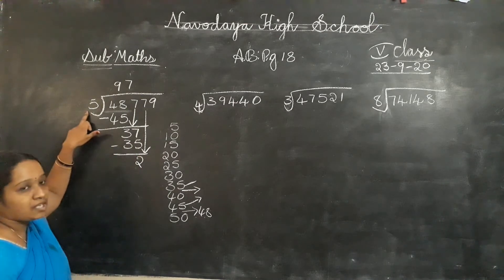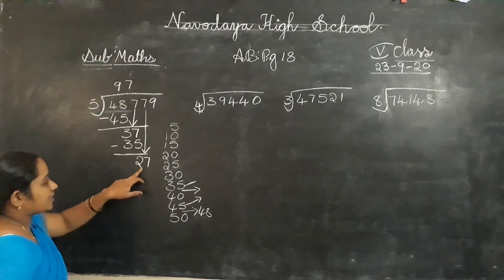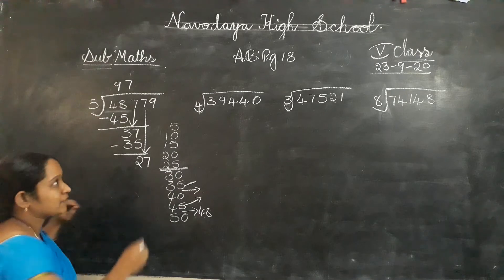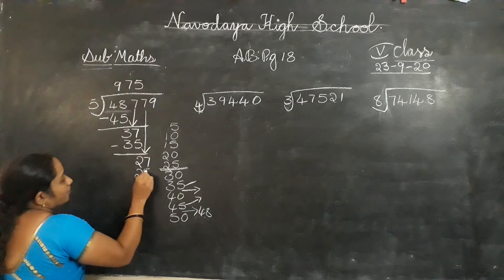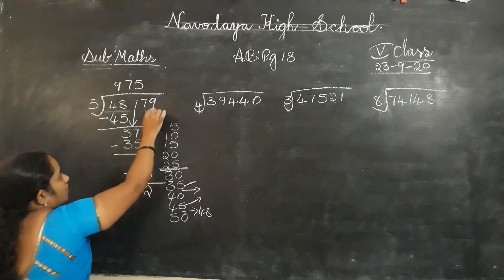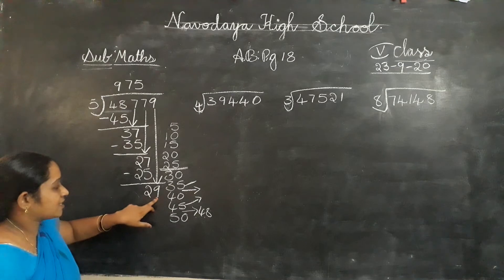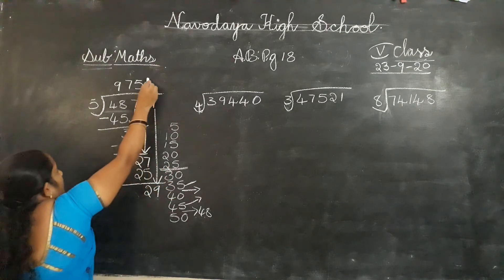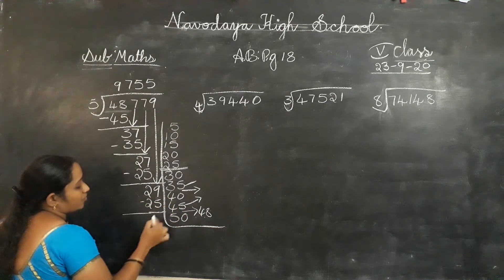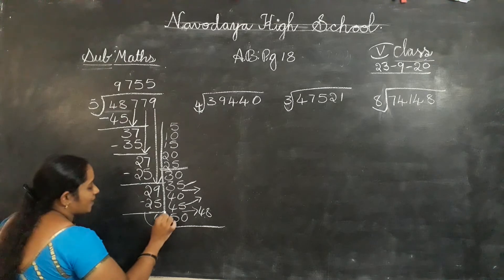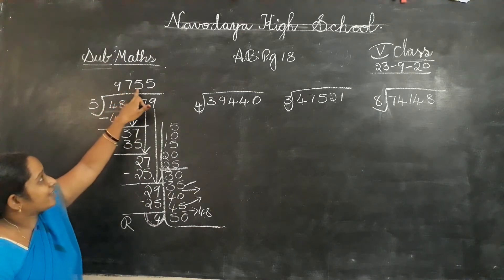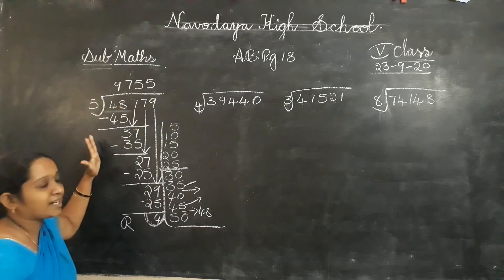37 in the 5 table — is it there? No. It lies between 35 and 40. Choose the lesser number: 35. 5 sevens are 35. Do subtraction: 7 minus 5 is 2, 3 minus 3 is 0 — no need to write 0. Next, 2 is less than 5, so write down the next digit. 27 — is it in the 5 table? No. Choose 25. 5 fives are 25. Minus: 7 minus 5 is 2. Next: 2 divided by 5 — not possible. Write down 29. Choose 25 again. 5 fives are 25. Subtraction: 9 minus 5 is 4, 2 minus 2 is 0. So the remainder is 4, and the quotient is 9755.